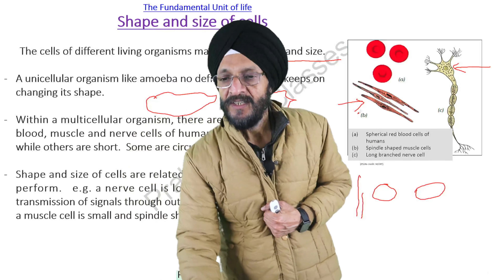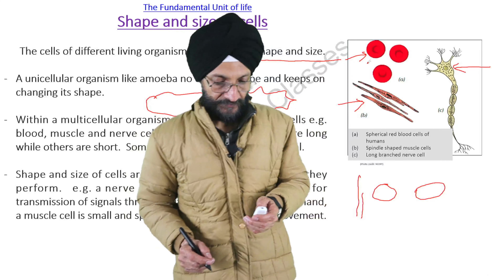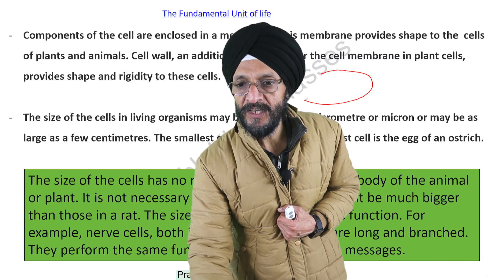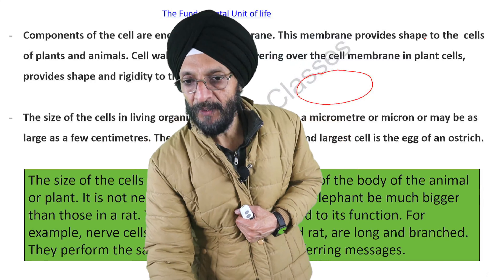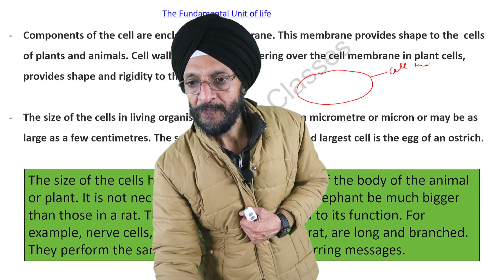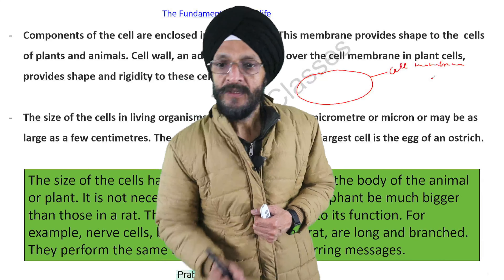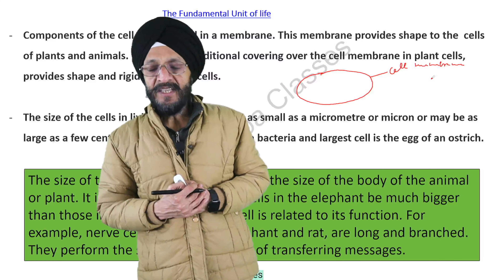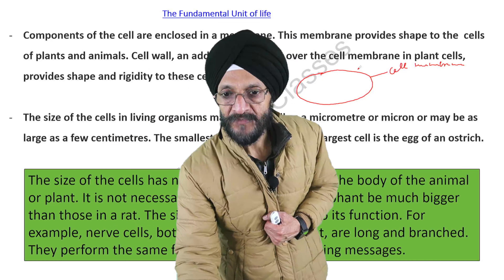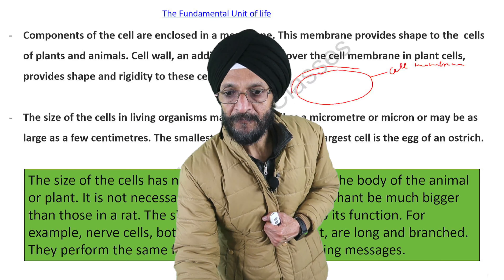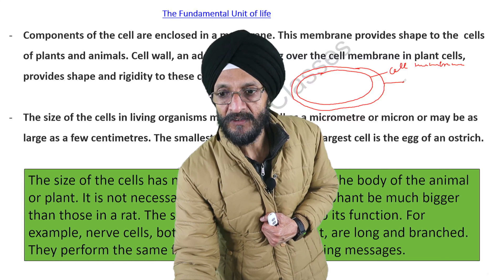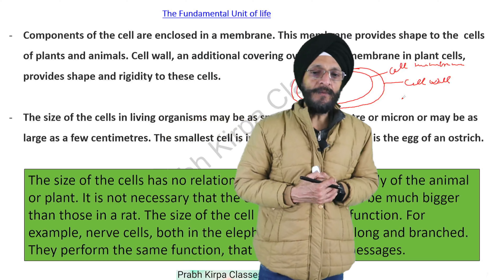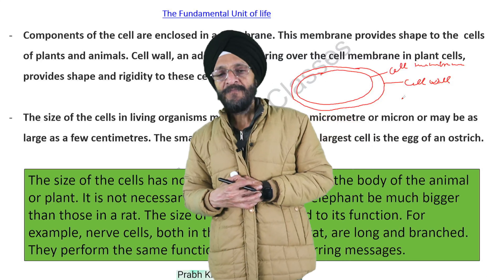The red blood cells in human beings are spherical. The components of the cell are enclosed in a membrane known as the cell membrane. The cell membrane provides shape to the cells of plants and animals. In the case of plant cells there is an additional covering over the cell membrane which is known as the cell wall. Cell wall is present only in plant cells and provides shape and rigidity to these cells.